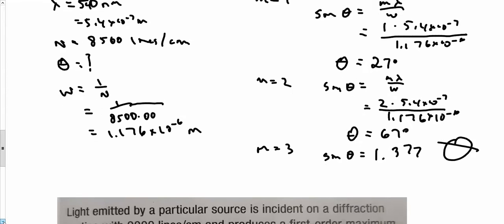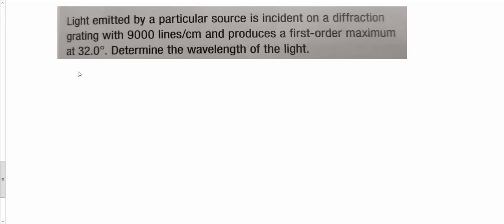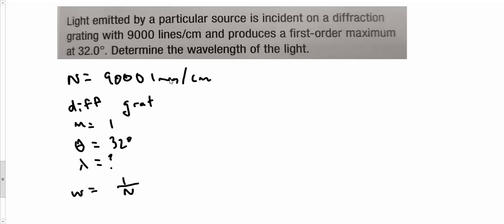Next question. I see n here is going to be 9,000 lines per centimeter. This is a diffraction grating. m is 1, and I see theta is 32 degrees, and it's asking me for what lambda is. I'm going to need w is 1 over n. Now, again, this is in centimeters, so I'm going to get 1 over, not just 9,000, I'm going to add two more zeros on there. Now, this is going to be in meters.